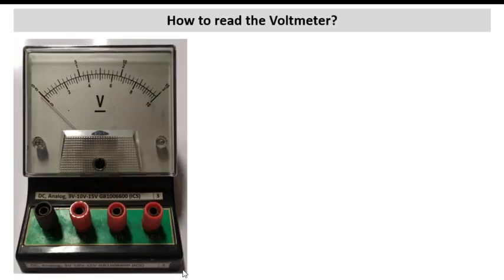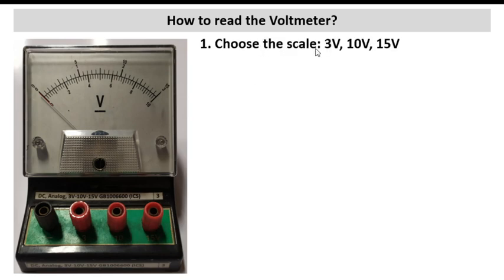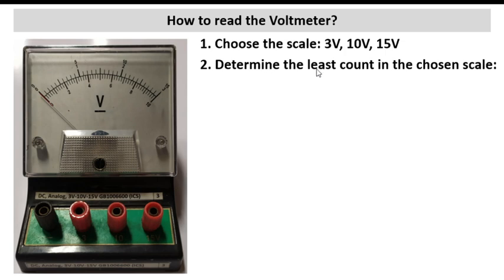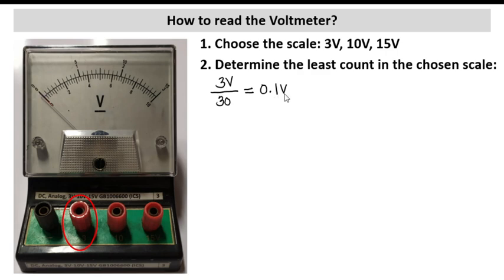How to read the voltmeter? In this experiment, you will be seeing a voltmeter that has different scales: 3 volts, 10 volts, and 15 volts. The first step is to choose the scale that you will use, then determine the least count in the chosen scale. For example, if you connected your circuit using the 3 volts scale, that would be 3 volts divided by 30 — there are 30 divisions in our meter display — which is equivalent to 0.1 volt. So each division has a least count of 0.1 volt if our circuit is connected to the 3 volts scale.